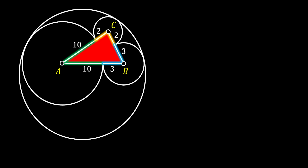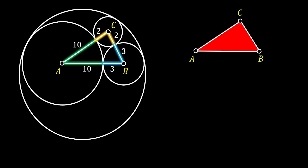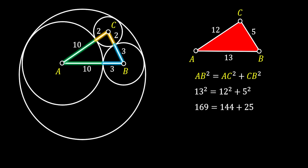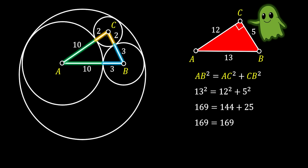Let's isolate triangle ABC and take a closer look at its sides. You can see this triangle has side lengths of 5, 12, and 13. If you're good at mathematics, you already know this is a right angle triangle. We can prove it using the Pythagorean theorem: 13 is the hypotenuse since it's the biggest side, and you can verify that the theorem applies. This means the angle at point C must be a right angle.